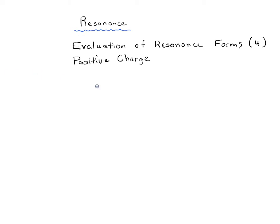In this video we're going to continue evaluating the factors which make some resonance forms more stable than others. Previously we've talked about the importance of charge — neutral resonance forms are more stable than charged resonance forms — and we said it's important to have full octets. We talked about factors which stabilize negative charge, and now we're going to talk about factors which stabilize positive charge.